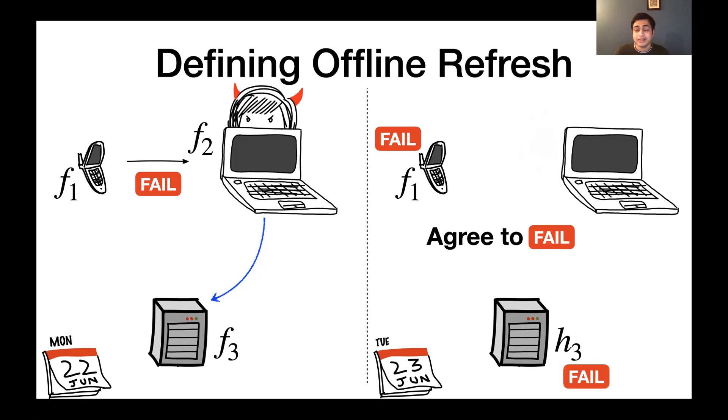So what we want, and this could be quite bad because in many scenarios, this could even mean a loss of funds that are tied to the public key of the account. So what we want is for parties to be in agreement. That is, honest parties should always be in agreement about whether to erase their shares and move to a new sharing, or whether the refresh procedure failed and so they must retain their old shares. We call this unanimous erasure.